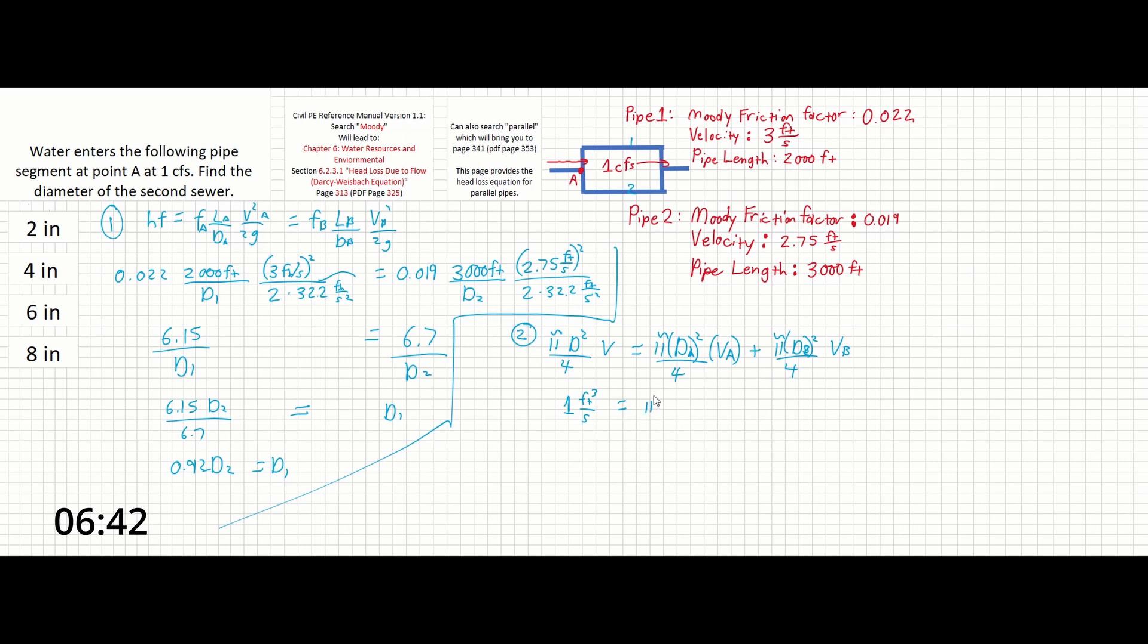pi times 0.92 pi d2, d2, d2 and that whole quantity will be squared over 4 times our velocity of 3 feet per second